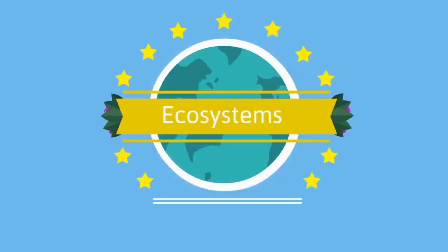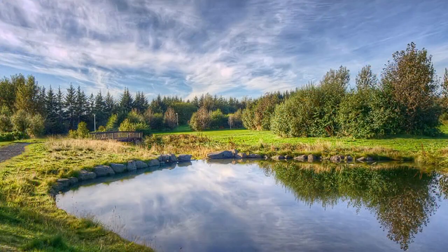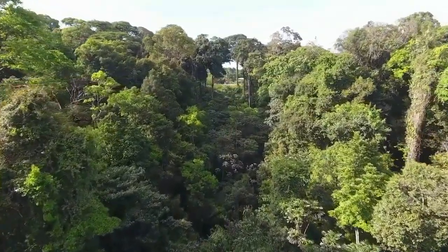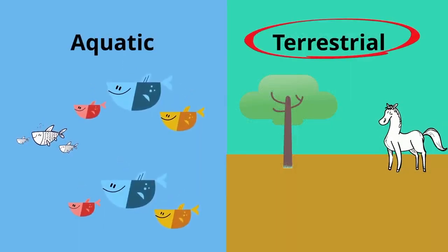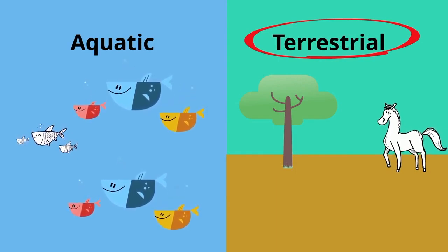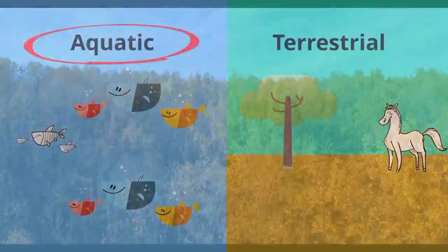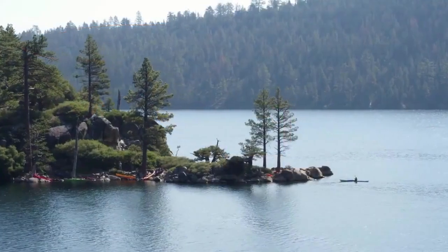Ecosystems come in a large variety of sizes. They can exist in a small area such as a decaying tree trunk or a pond, or in large forms such as an entire rainforest. Two major types of ecosystems are terrestrial and aquatic. A terrestrial ecosystem is a land-based community of organisms and the interactions of biotic and abiotic components in a given area — an example would be a deciduous forest. An aquatic ecosystem is water-based, such as a lake, river, or coral reef.